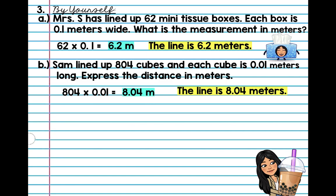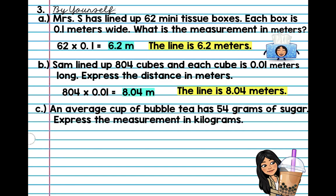Now, we're going to do one that's a little trickier. Let's try it. An average cup of bubble tea has 54 grams of sugar. Express the measurement in kilograms. So, we're not going to be multiplying 54 by anything. We're going to figure out, hmm, how many kilograms of sugar is in bubble tea? So, the question you ask yourself is, how many kilograms are in a gram? So, from what we know, kilo is 1,000. So, yes, there are 1,000 grams in a kilogram.